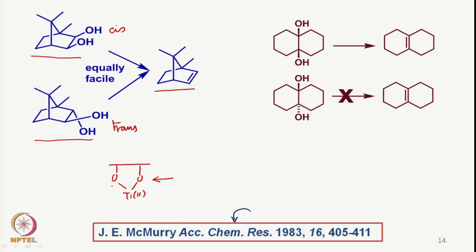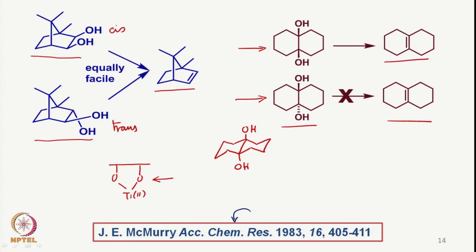If there was a difference, the trans-diol would have reacted slower than the cis, since formation of the five-membered intermediate would be easier with the cis-diol. In another reaction, a cis-diol reacts very easily but the trans-diol does not react at all. Looking at the conformations of these diols, the 2-hydroxy group in the trans-diol cannot readily access the same titanium. The second mechanistic possibility — where each hydroxy group coordinates to a separate titanium — is also ruled out because the trans-diol shows no reaction and therefore no product formation.